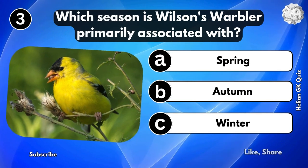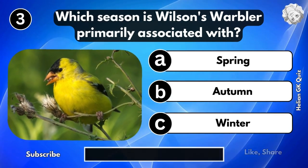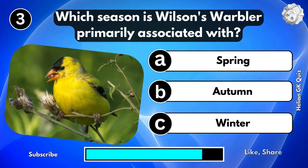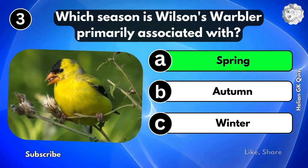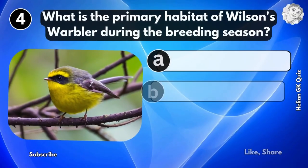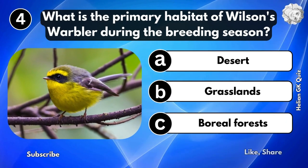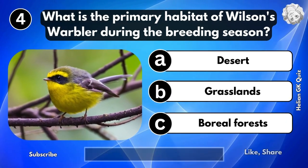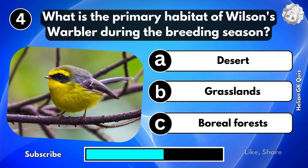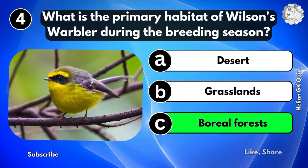Which season is Wilson's Warbler primarily associated with? Spring Season. What is the primary habitat of Wilson's Warbler during the breeding season? Boreal Forest.